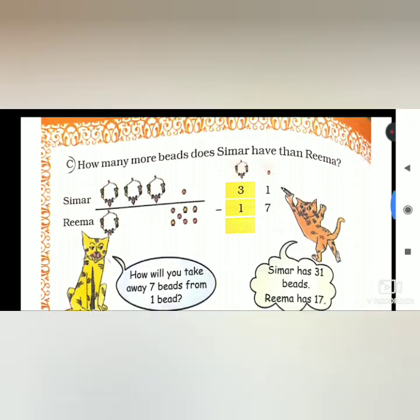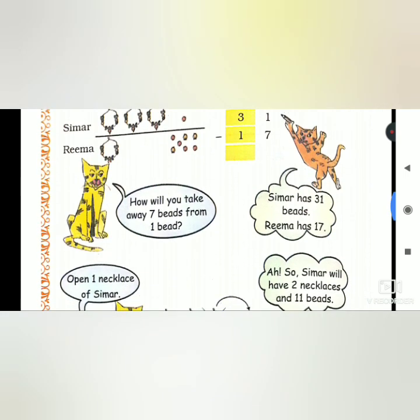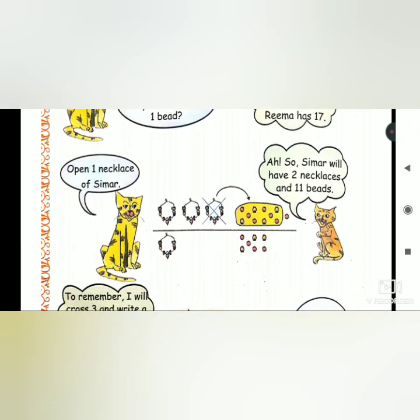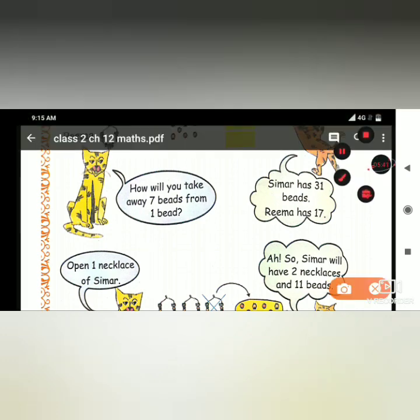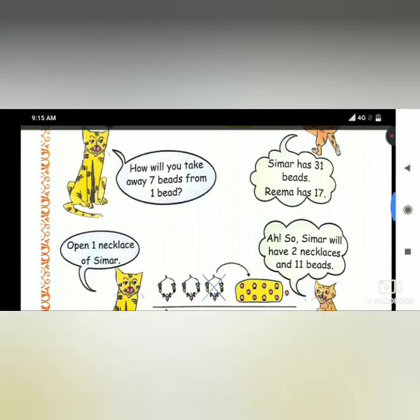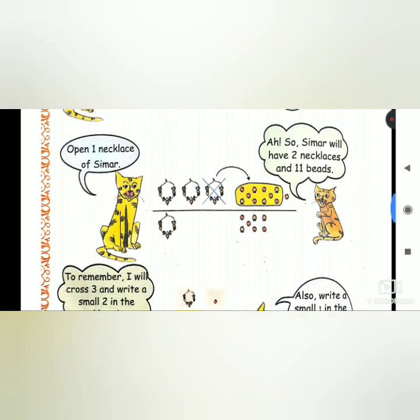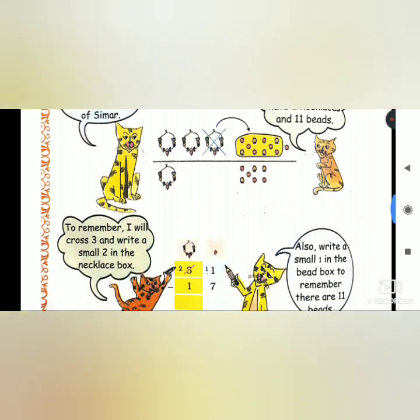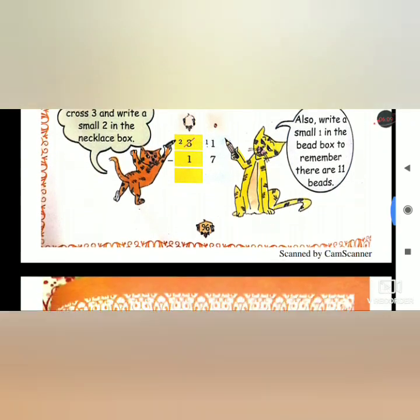How many more beads does Simar have than Rima? Simar has 31, Rima has 17. How will you take away 7 beads from 1 bead? Open 1 necklace of Simar. So Simar will have now 2 necklaces and 11 beads, which is 20 plus 11 equals 31. Cross 3 and write small 2 in the necklace box, write small 1 in the bead box. Remember there are 11 beads.